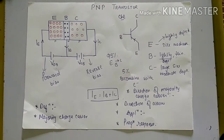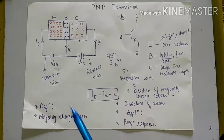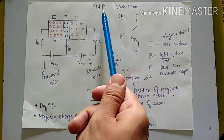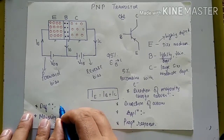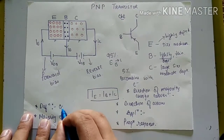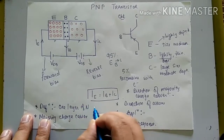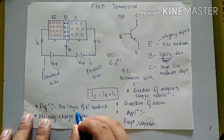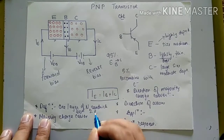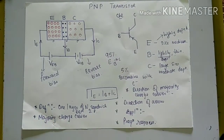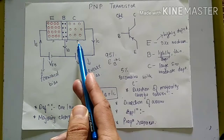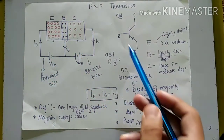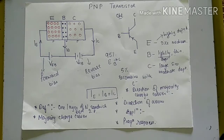The definition of PNP transistor: one layer of N type material is sandwiched between two P type materials. You can see in the diagram that N type is sandwiched between 2P type. This is the circuit symbol of the PNP transistor.